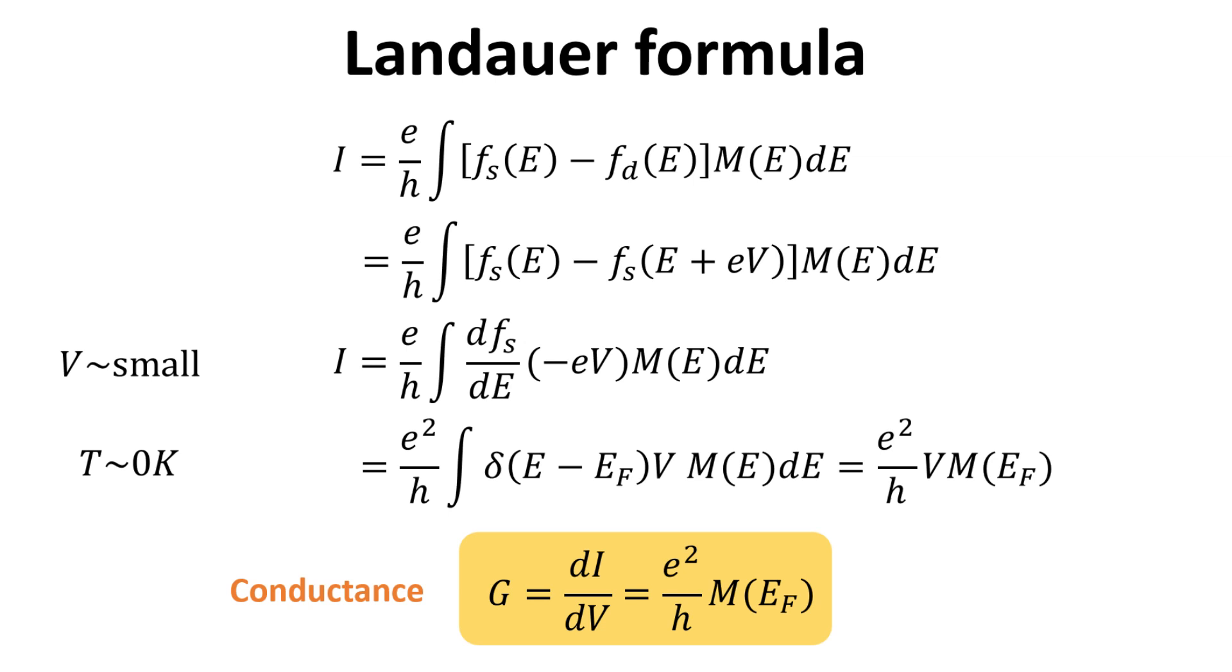The electrical conductance, g, which is given by the derivative of i with respect to v, is thus given by the von Klitzing conductance multiplied by the number of modes m. This is great, if we know what m is, which will come next.